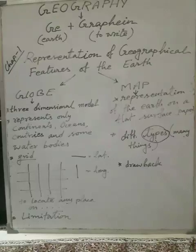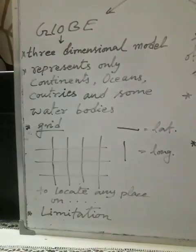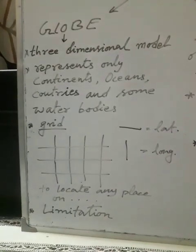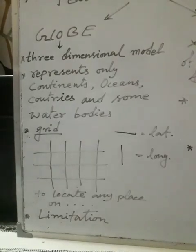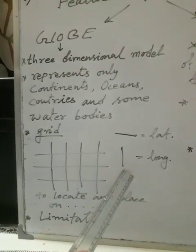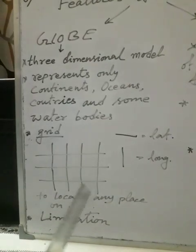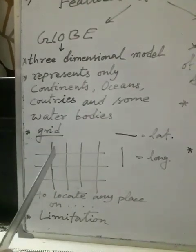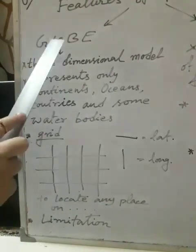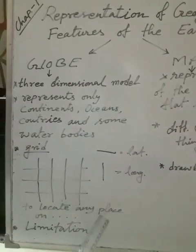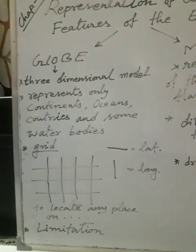One more thing we can see on a globe is called the grid. If you see a globe, you can see many lines — all imaginary lines. Some lines are horizontally placed and some are vertically placed. When drawn together, they form a frame of small boxes — that small box structure is called a grid. The horizontal lines are called latitude and the vertical ones are called longitude. Latitude and longitude together form a grid, which is very useful to locate any place on a globe or map.